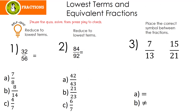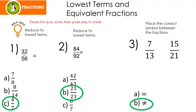Here's the self-quiz. Pause the quiz, solve, then press play to check. 32 over 56 reduces to 4 sevenths. Let's look at number 2: 84 over 92 reduces to 21 over 23. And finally, we need to figure out if these are equivalent fractions or not — it turns out they are not. If you got these correct, you can move along. For the rest of us, let's see how I did it.